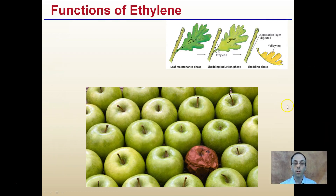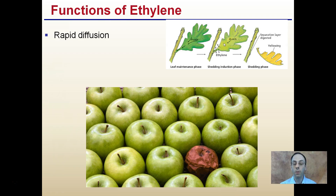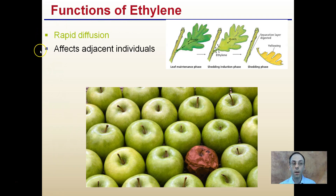Looking at the functions of ethylene — the abscission portion. Ethylene has rapid diffusion, so it can work throughout the leaf. Abscission is the shedding phase where the leaf is dropped off. Ethylene can actually block auxins from activating. Notice with a lot of hormones there are interactions between them. Because ethylene is a gas, it can diffuse very rapidly and also affects adjacent individuals.